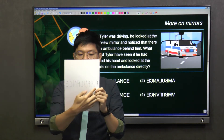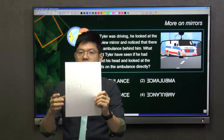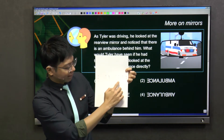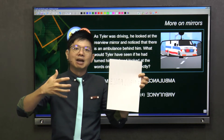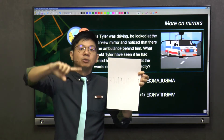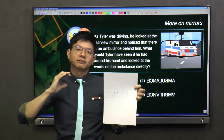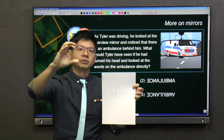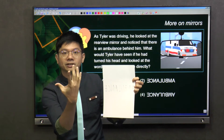So it looks something like this — it's not a proper way of writing, right? But it has to be printed like this on the front of the ambulance. Because who will see the ambulance? It's the drivers in front. So the drivers will see the ambulance behind through the rear mirror, and when they see the word 'ambulance' through the rear mirror, the word is actually laterally inverted.